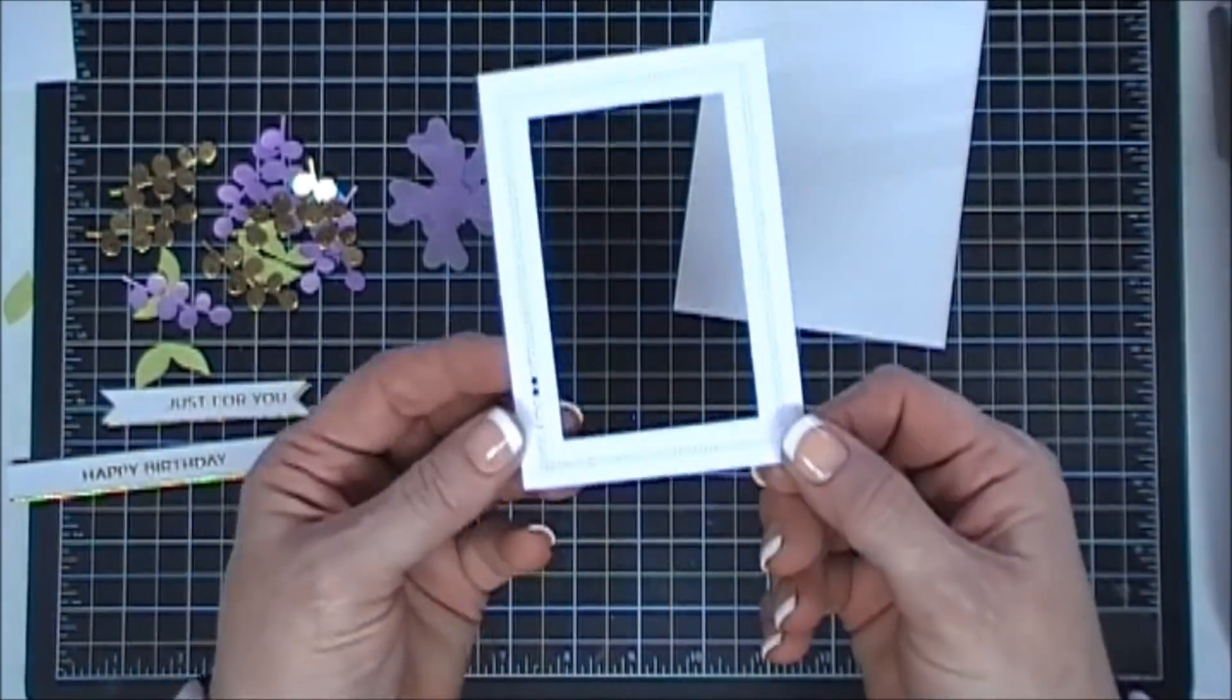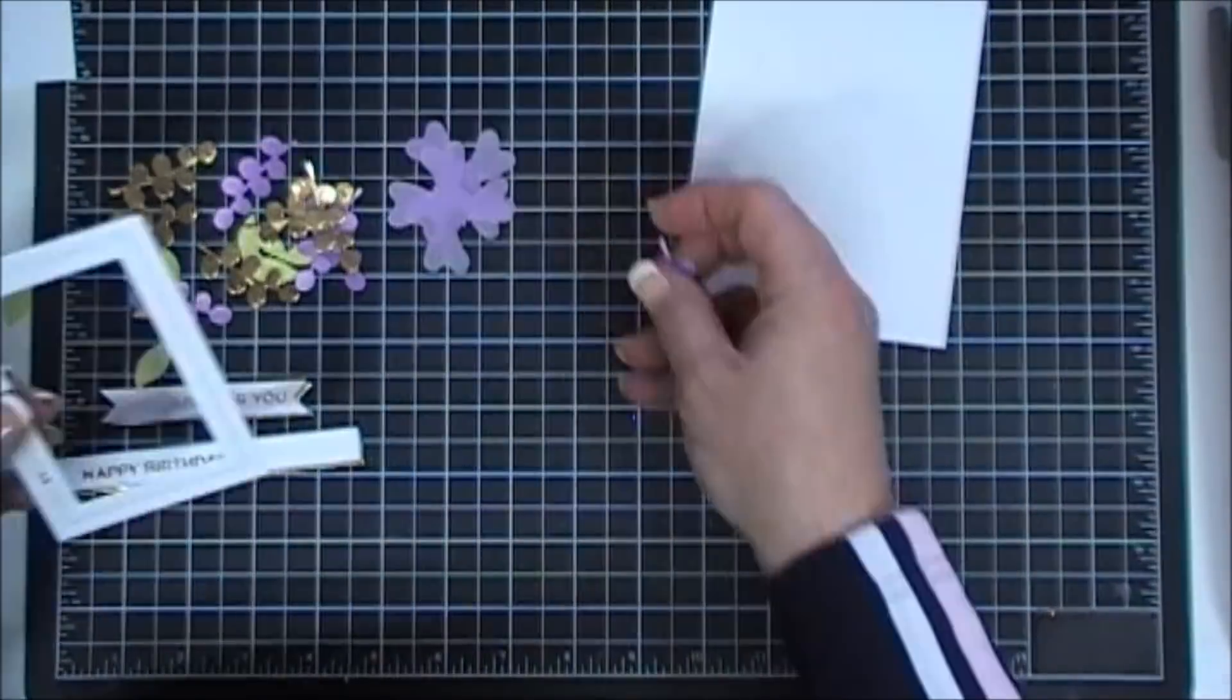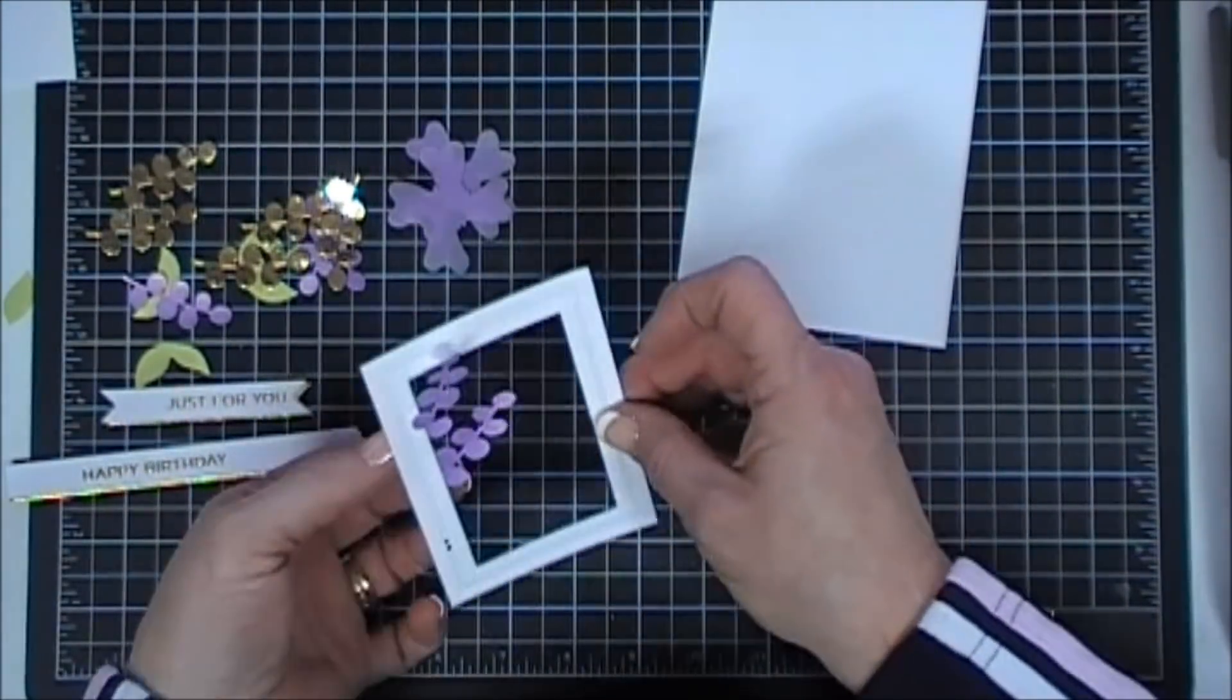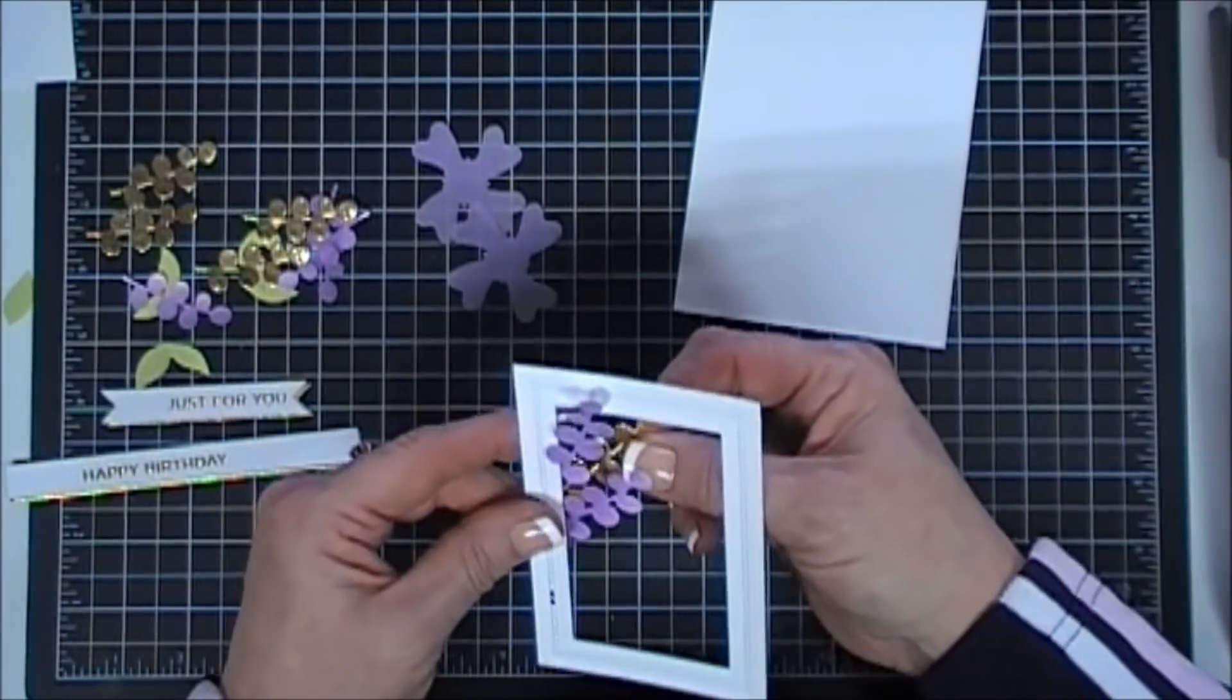I was trying to find the other dots, but it actually rolled back in my tape runner. I think it's okay because we're going to cover that area up with our sentiment. Next I'm going to adhere a few of my flourishes to the left of my frame, just kind of arranging them how I want them to go.